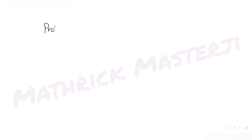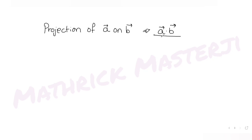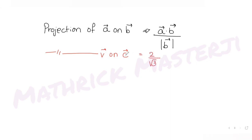The projection of v on c is defined as (v·c) / |c|. So we set up: (v·c) / |c| = 2/√3, where c = î - ĵ + k̂.